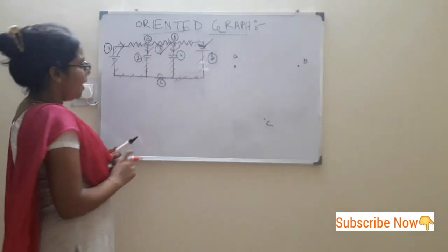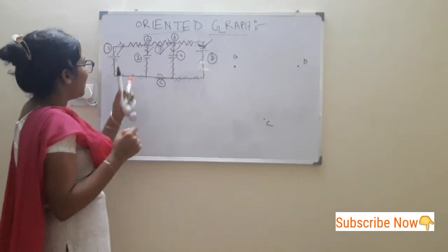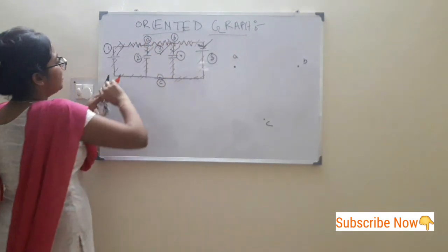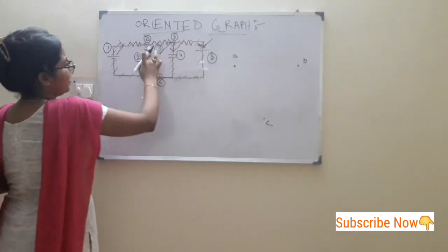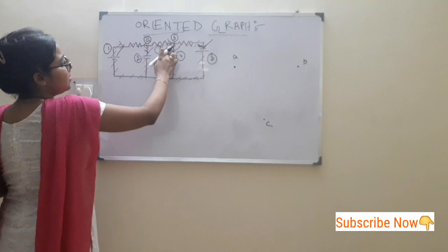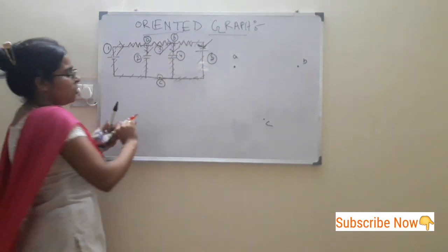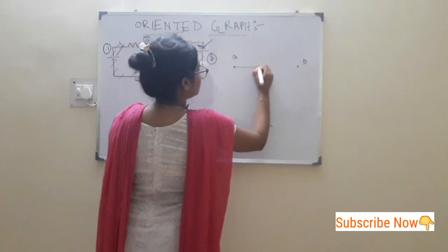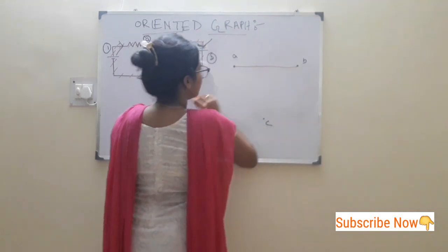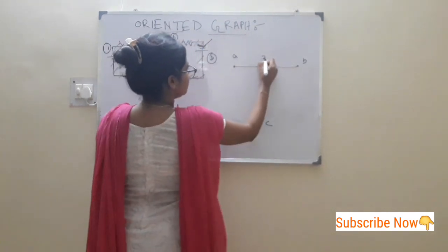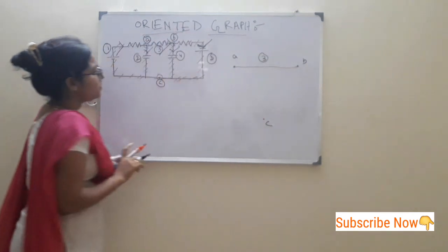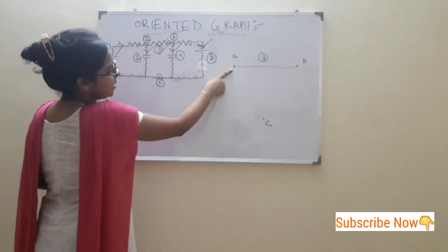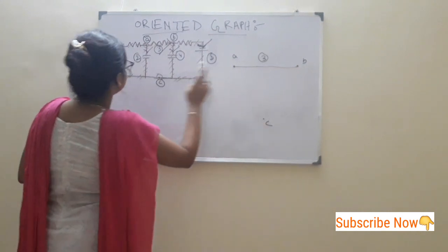Now we have to draw the branches. Between node A and B, the branch is numbered by 3. So first draw this branch — branch 3. Next, we have to decide how many branches are connected between node A and node C.